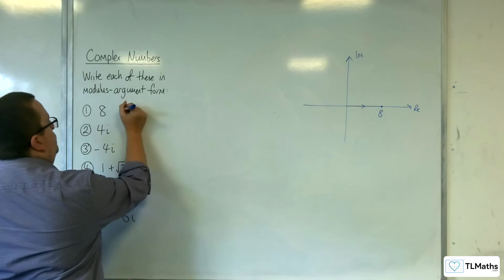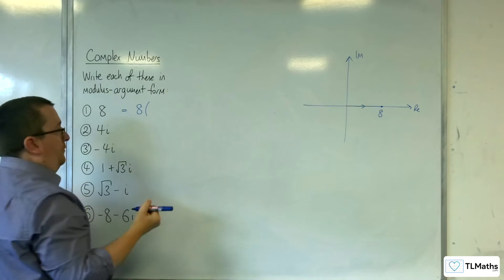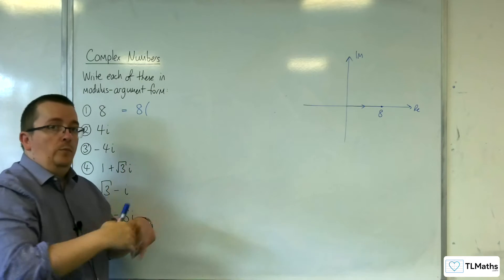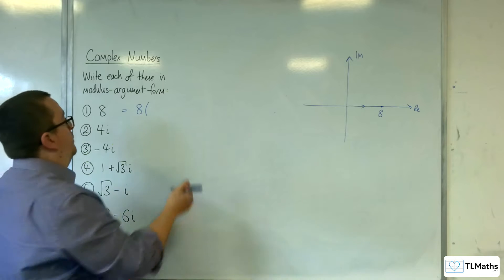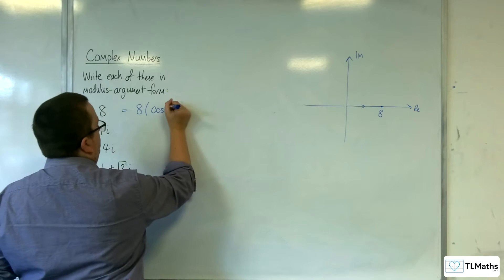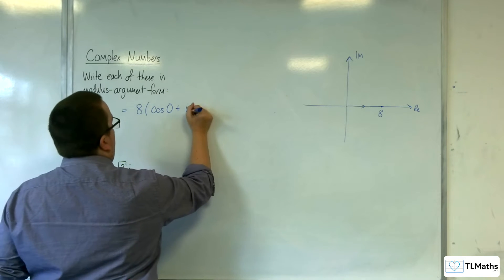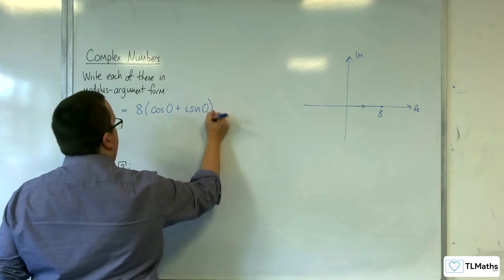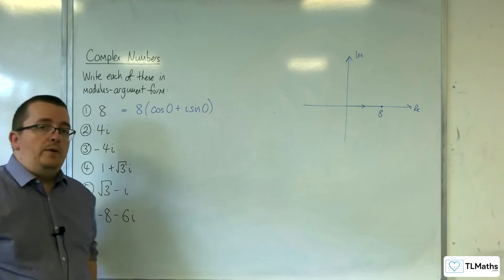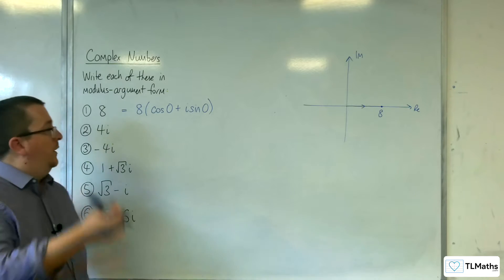You'd be able to write this as 8 lots of r times cosine of the angle, so cosine of 0 plus i sine 0. So that is now in modulus argument form.